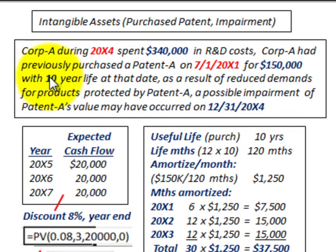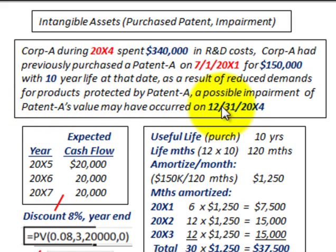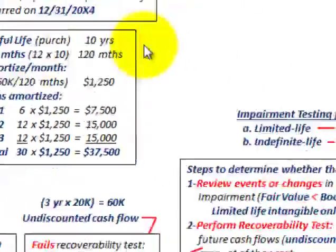The patent had a useful life of 10 years at that time. As a result of reduced demand for the products protected by Patent A, a possible impairment of Patent A's value may have occurred on 12/31/20X4. We're going to test for that and see if we have an impairment.